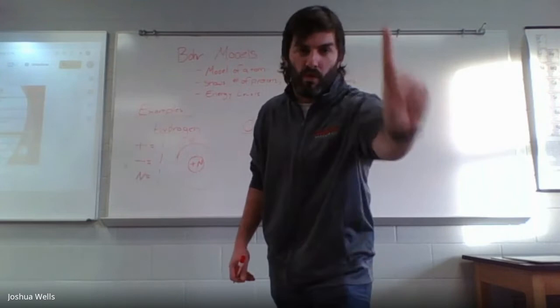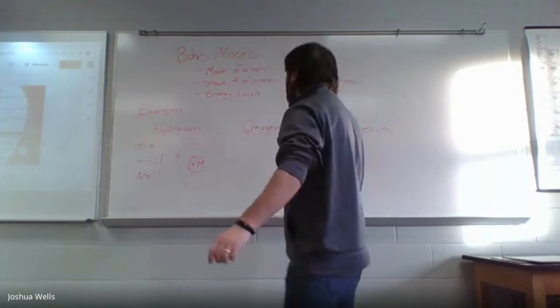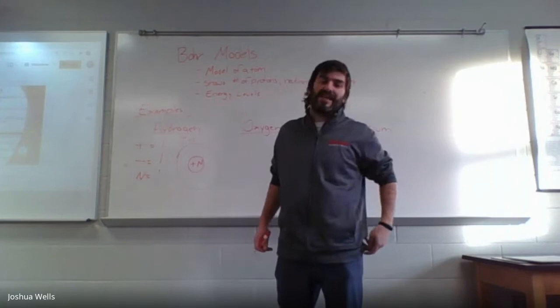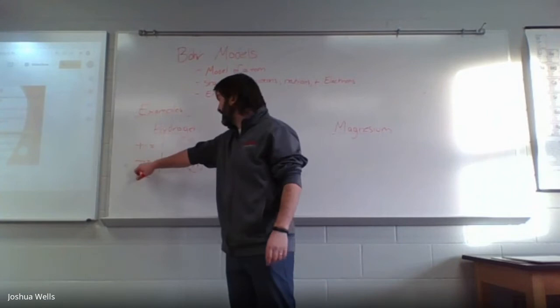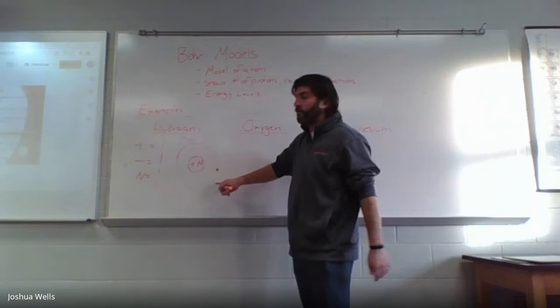The reason why is because hydrogen is found in row number one of the periodic table. Because it is in period one, that means I have just one energy level, meaning I draw one circle. Now I have to put my electron on that energy level. I said I have one electron, so I am going to put one dot on that energy level. This is my Bohr model for hydrogen.